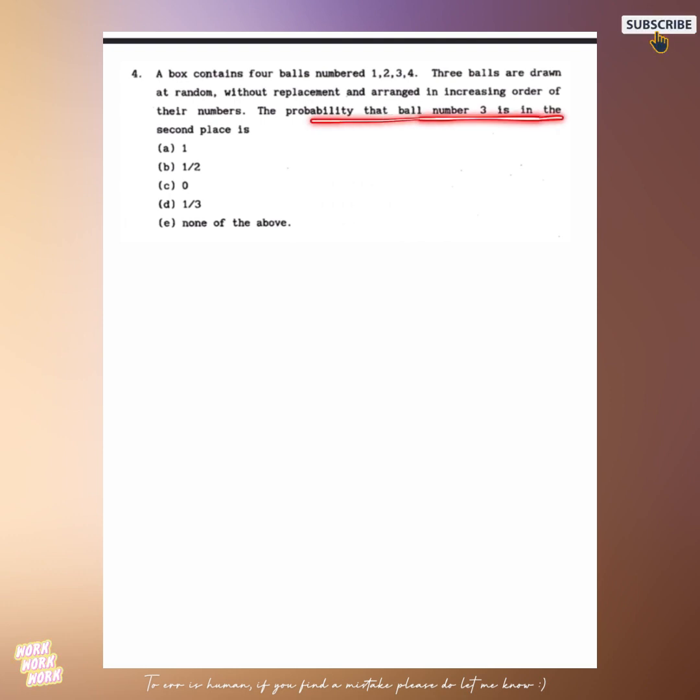We have been given a box which has 4 numbers 1, 2, 3, 4 and we have to draw 3 balls. We have to find the probability that box number 3 is in second place. See let's do it very simply. Let's place the ball with number 3 in the middle. Now all we have to figure out is the way such that the balls before number 3 are smaller than 3 and balls after number 3 are bigger than 3. Now there are total 4C3 that is 4 ways.